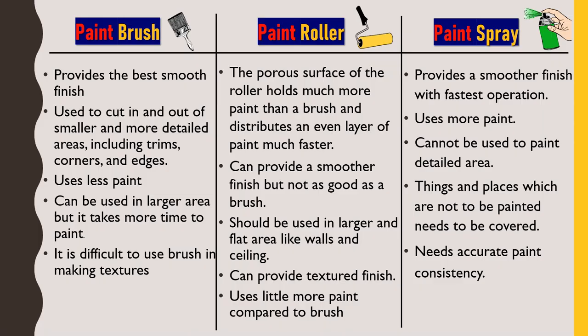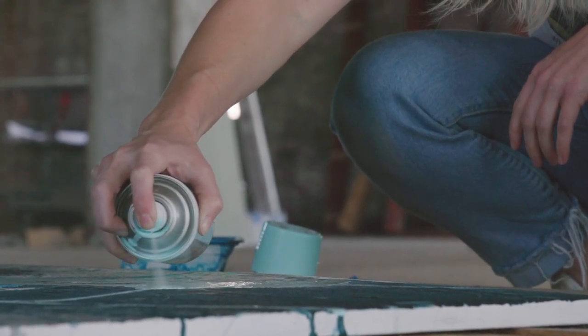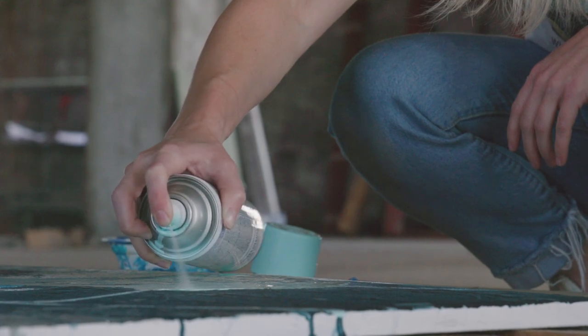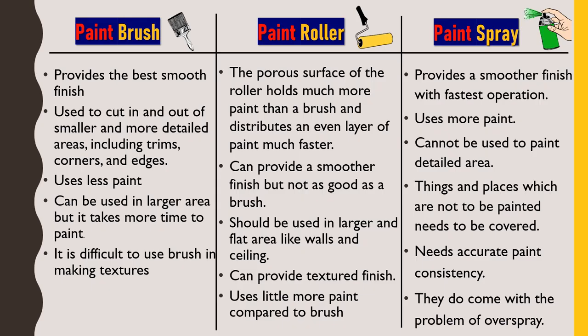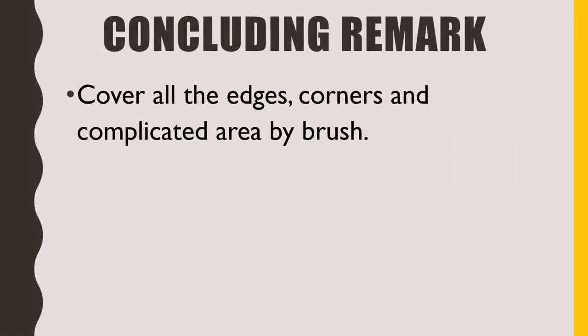Spray guns come with the problem of overspray. Sometimes the spray intensity might change from one session to another, so if we change the machine in the middle of a job, overspraying might be a problem. Or if the consistency is not maintained, overspraying might occur. So even using a spray gun is not as easy as it seems.